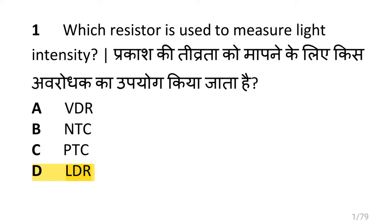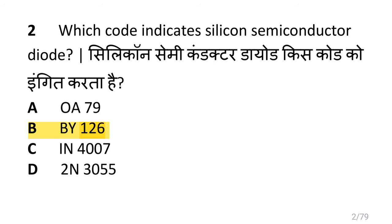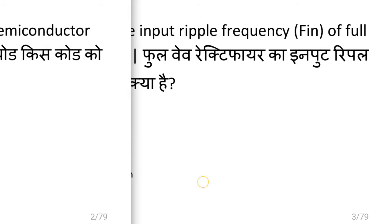Dear friends, we are going to see electronic practice. Which register is used to measure light intensity? i.e. LDR. Which code indicates a silicon semiconductor diode? i.e. BY126.